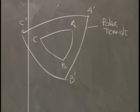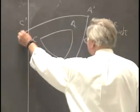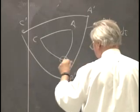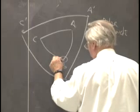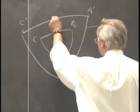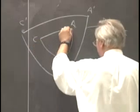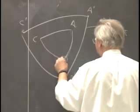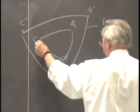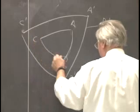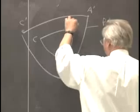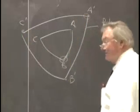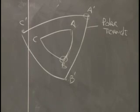To show this: C prime is the pole of arc AB, so B is 90 degrees away from C prime. B is 90 degrees from any point on that arc, so it's 90 degrees away from A prime. B is 90 degrees from A prime and 90 degrees from C prime, and therefore it has to be the pole of that arc. That was a little quick — it's written down in the notes.